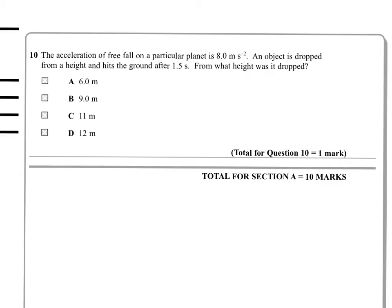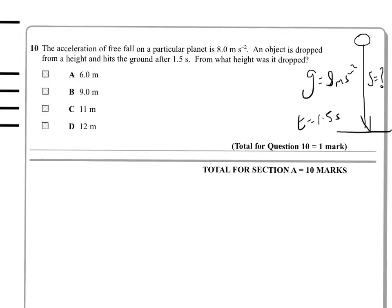Final multiple choice question. The acceleration of freefall on a particular planet is 8 metres per second squared. An object is dropped from a height and it hits the ground after 1.5 seconds. From what height is it dropped? So we've got G of 8 metres per second squared. We've got a time of 1.5 seconds for the fall. And we're being asked which one of these is the displacement. Now crucially, we're going to realise that U here would equal nothing.